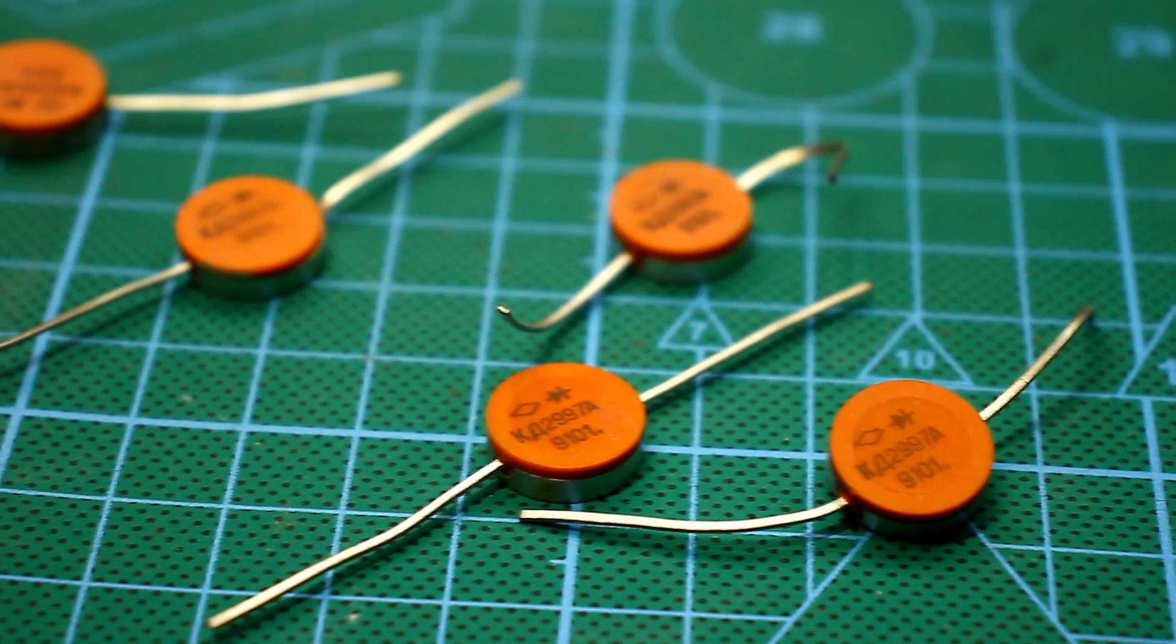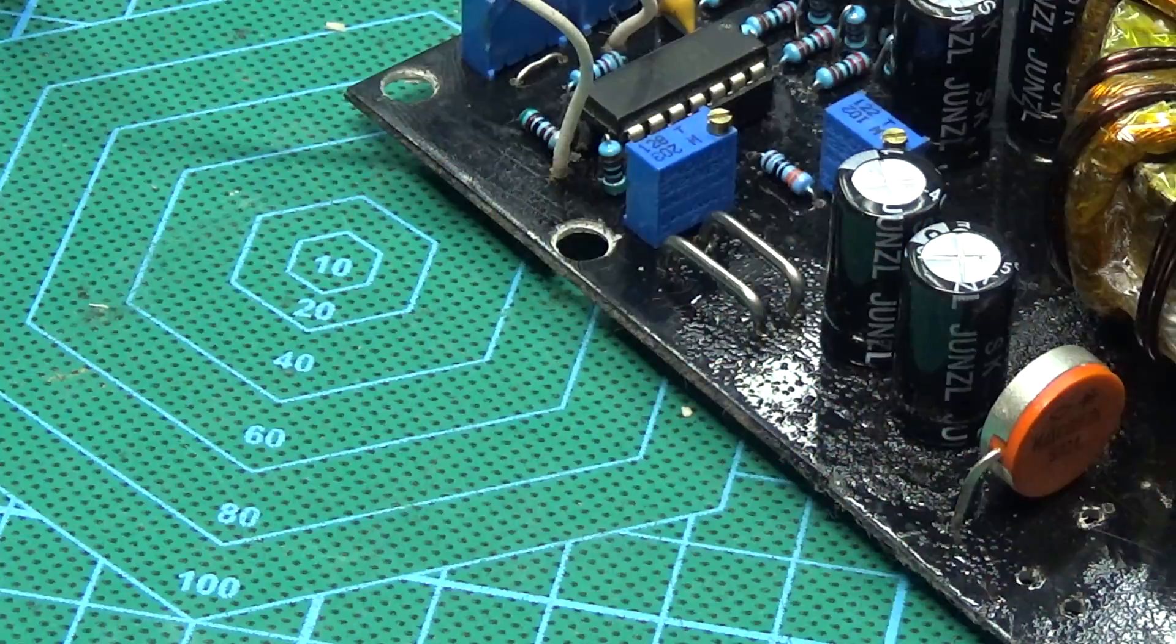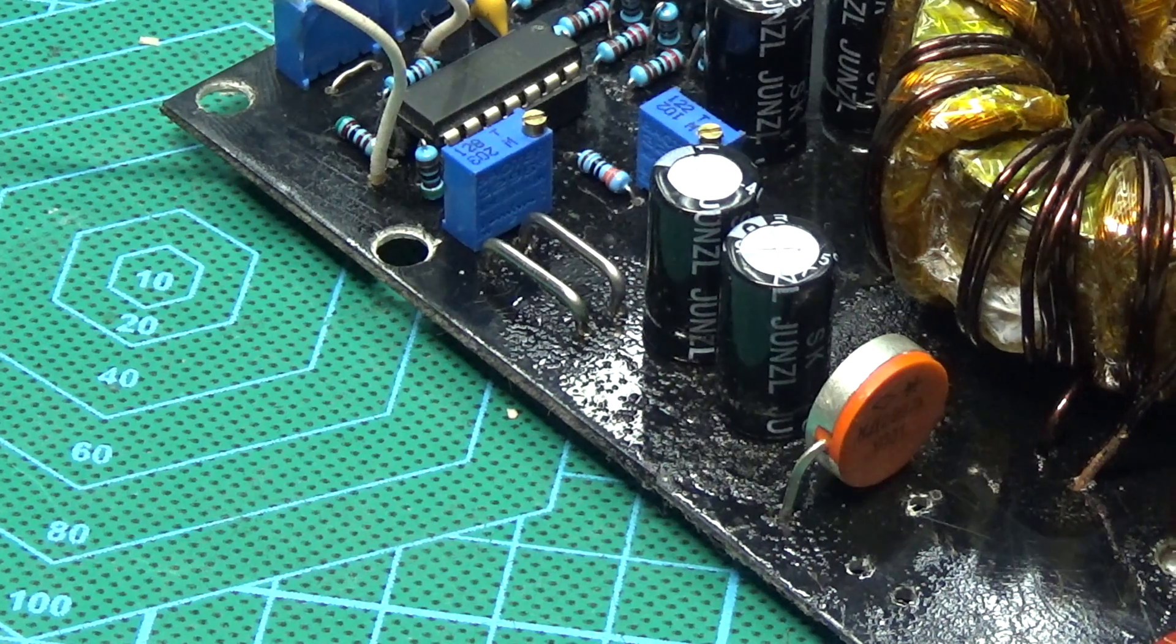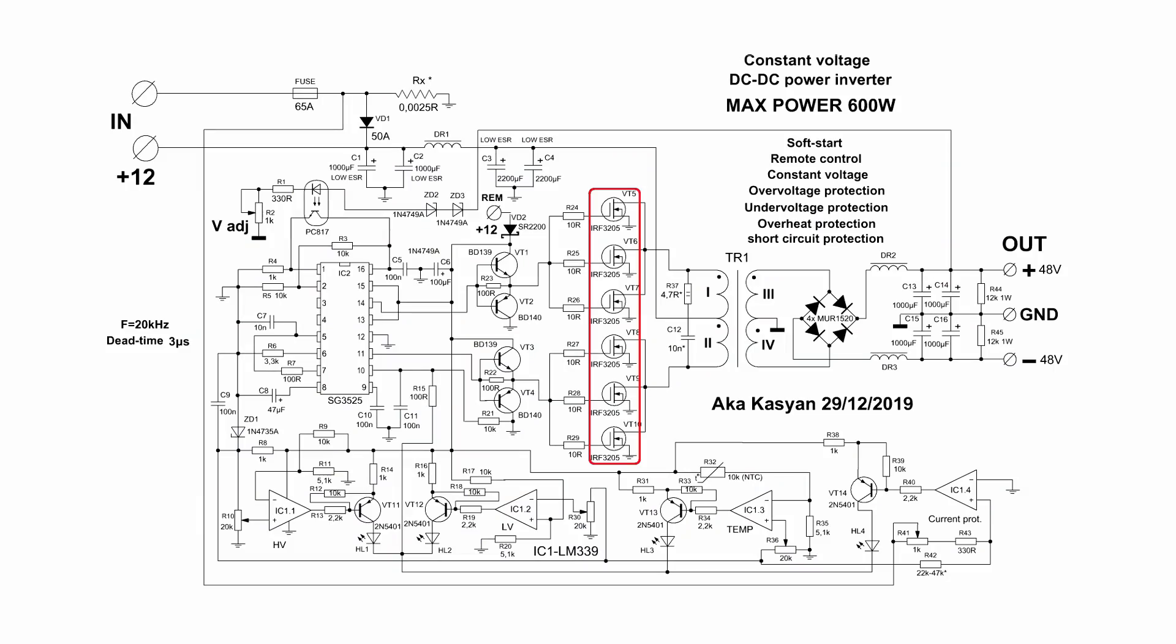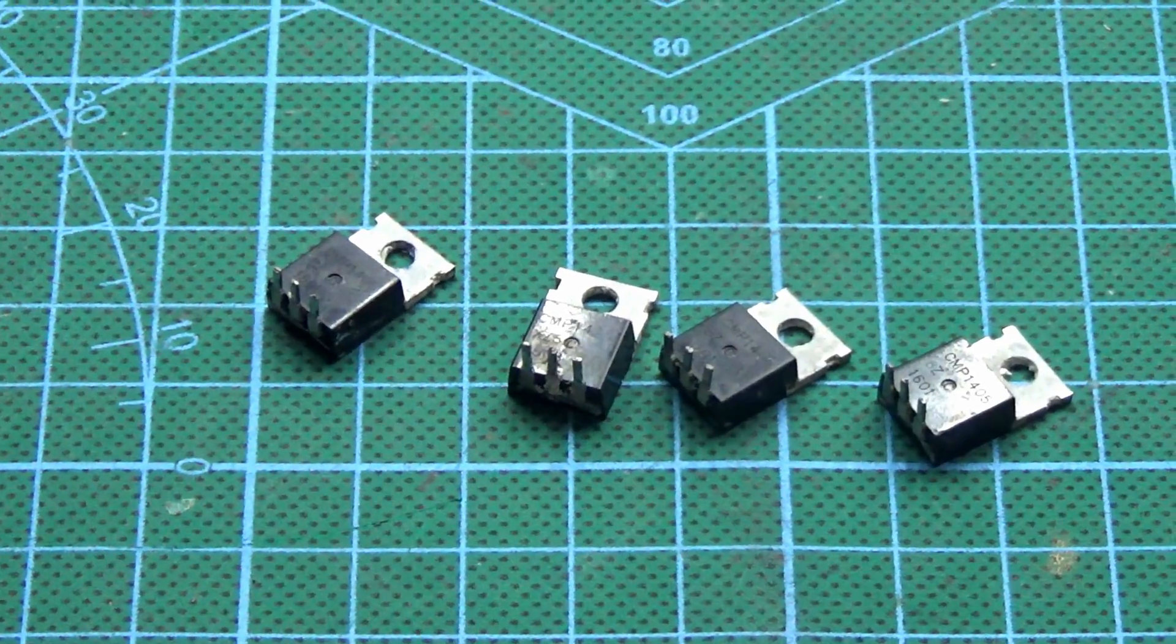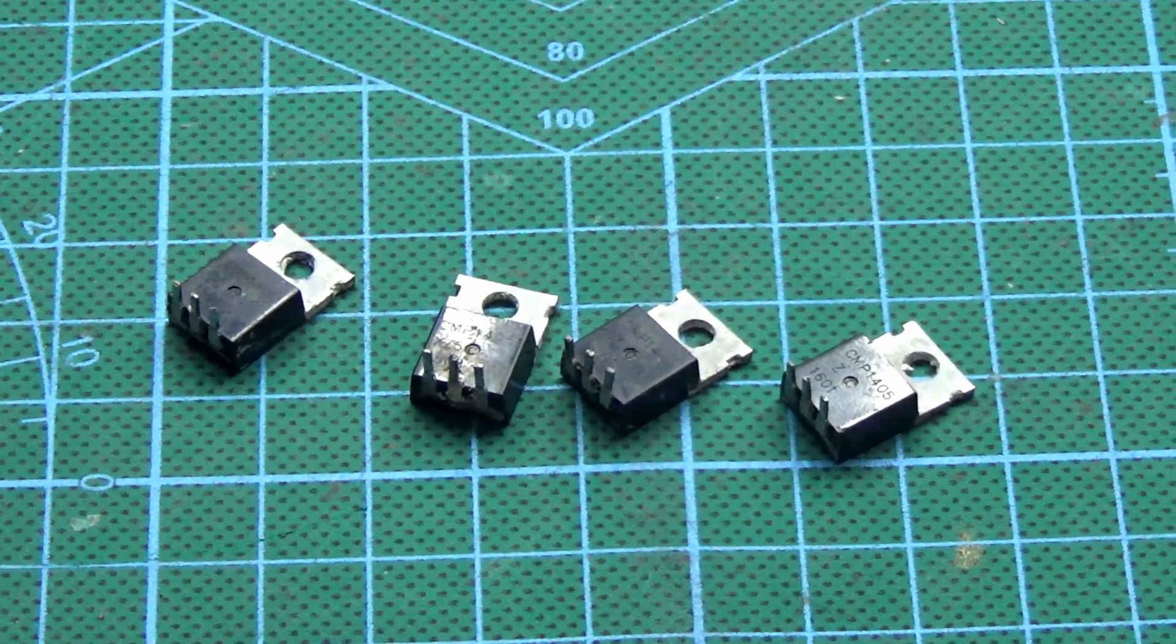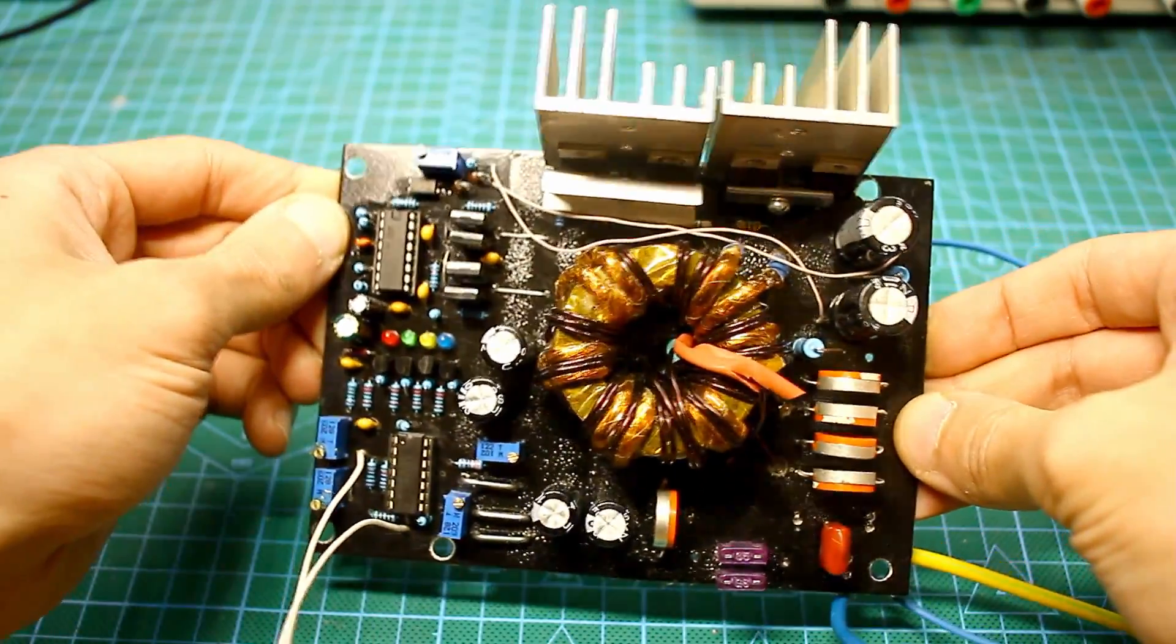Second, some components on the circuit may differ from those on the board. This is normal. Everything will work this way or that. Third, in the diagram, I drew 6 power transistors, but there are only 4 on the board. In order to increase power, you can use up to 8 transistors. The control can withstand it.